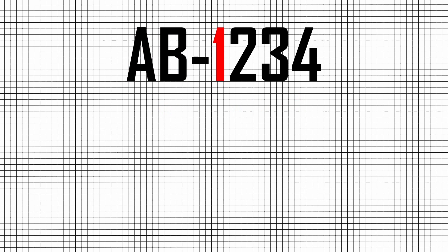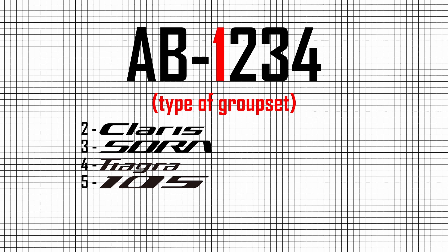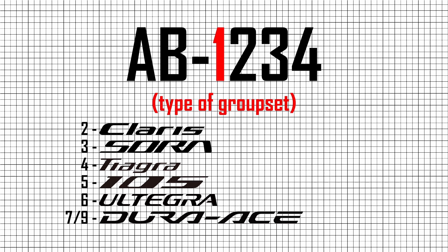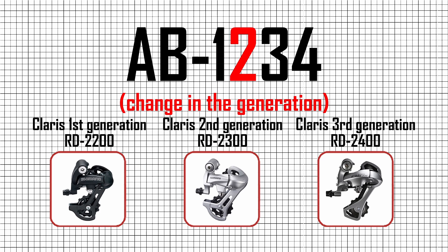The first number, 1, will be between 2 and 9, and it indicates which groupset the part belongs to. Between 1996 and 2011, the numbers represented: 2 for Claris groupset, 3 for Sora groupset, 4 for Tiagra groupset, 5 for 105 groupset, 6 for Ultegra groupset, 7 and 9 for Dura-Ace groupset. The second number, 2, indicates a change in the generation of the component — not necessarily sequential, but always higher.